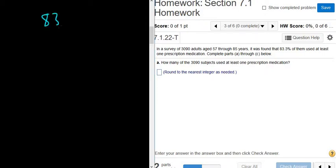So we're told that 83.3% of the 3,090 adults use one prescription medication. In mathematics, 'of' means multiply. So we can turn this percentage into a decimal.